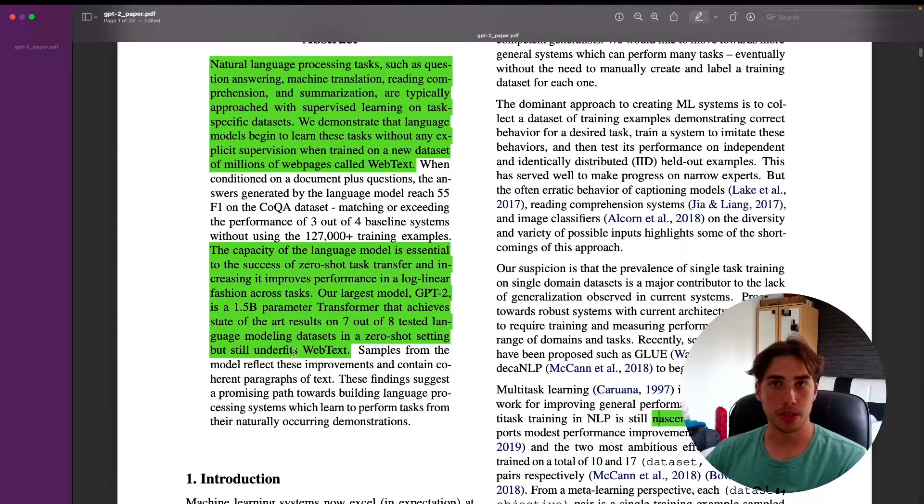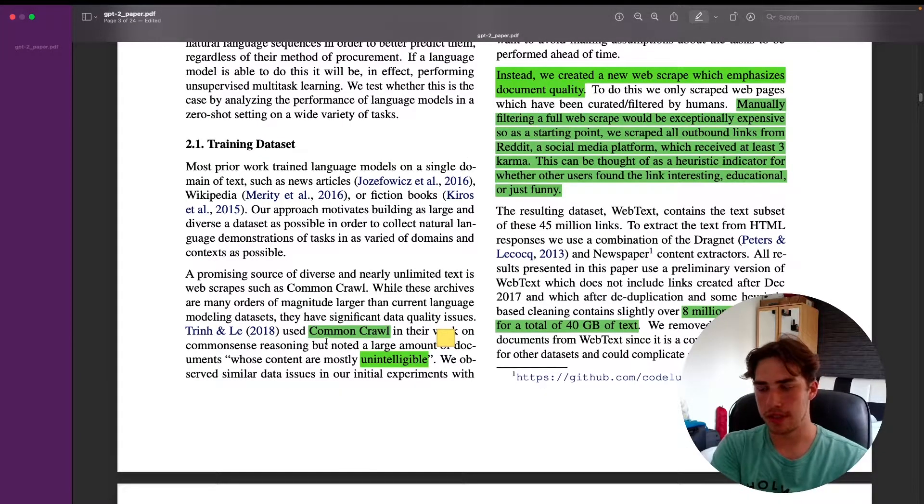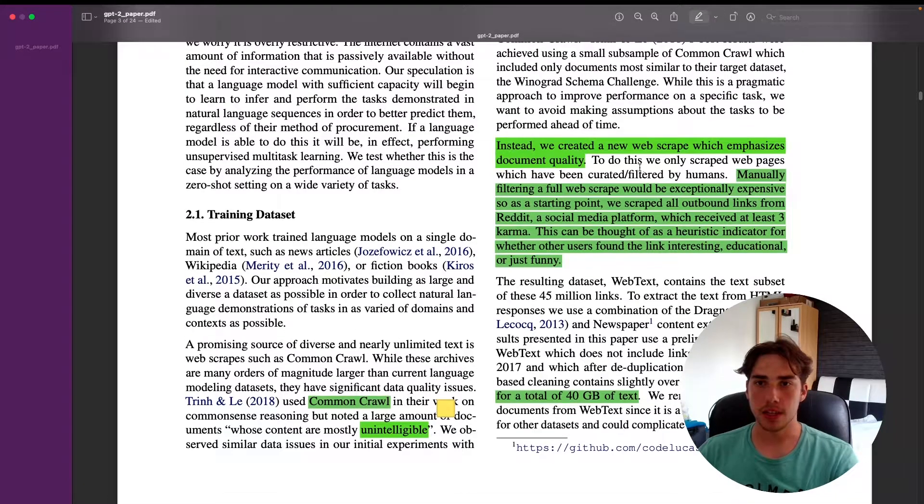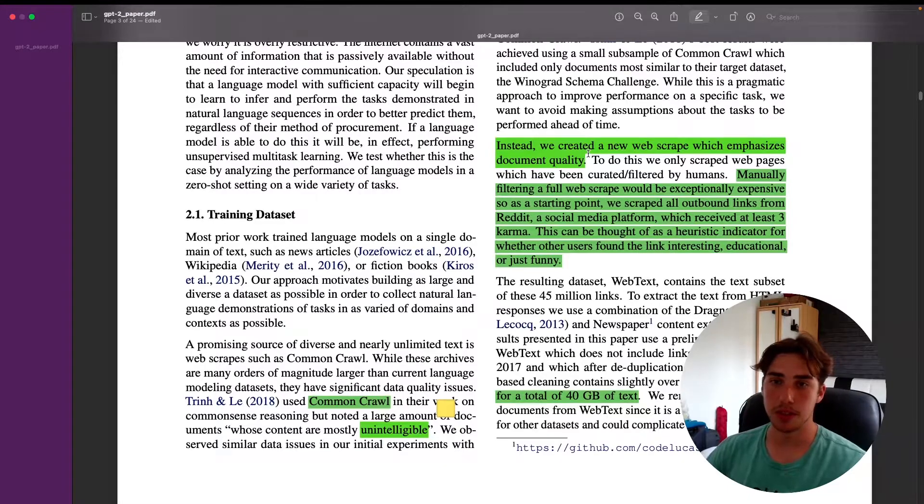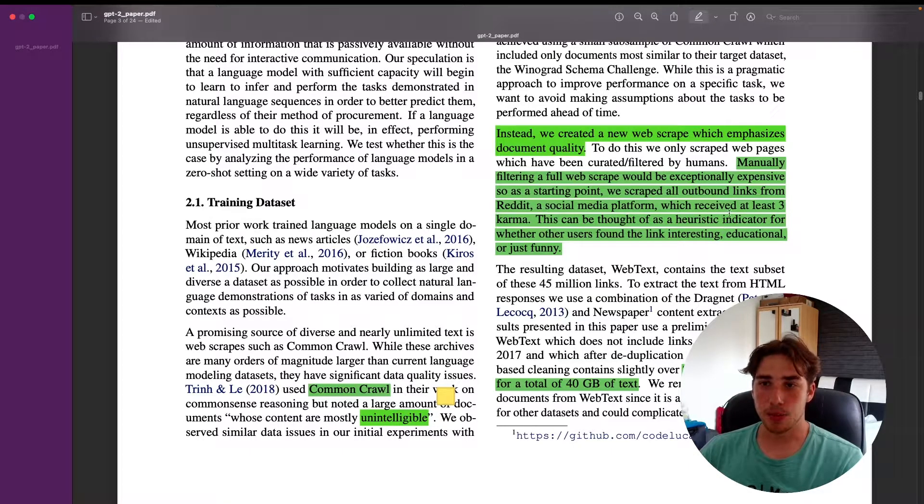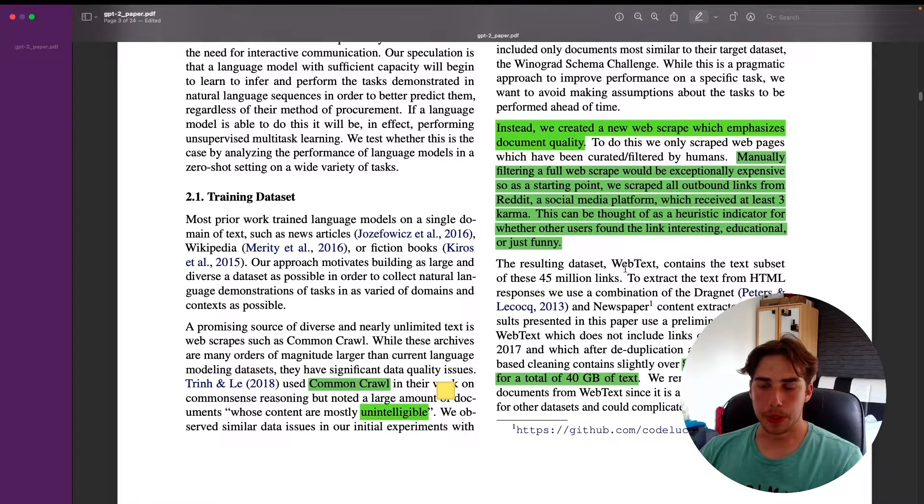That's interesting. GPT-2, compared to GPT-1, has 10 times more parameters. In the previous one it was 7,000 books; this time they tried to get the data from the internet. They used Common Crawl, but it turns out that the quality of the data was really poor, so they created a new web scraper which emphasized document quality. Essentially, they scraped all outbound links from Reddit which received at least three karma.